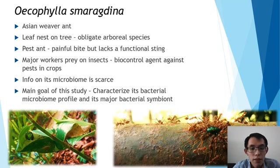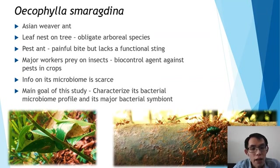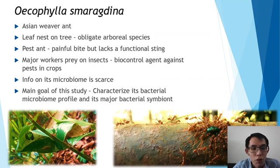In my study, I focus on Oecophylla smaragdina, which is also known as the Asian weaver ants. These ants build their nests on trees using leaves, which makes them an obligate arboreal species. They can give a painful bite although they lack a functional sting, and because of this they have been seen as a pest ant, but in fact they are important biocontrol agents against many agriculturally important pests.